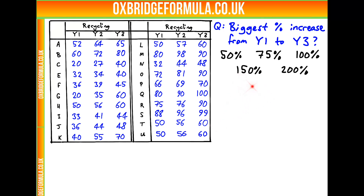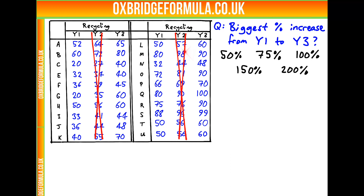So how can we make this easier for ourselves? There's a lot of data to sift through, so maybe we can get rid of some of it that we don't need. If we're looking at the increase from year 1 to year 3, we don't actually care about year 2 at all, so we can get rid of those values from our table.